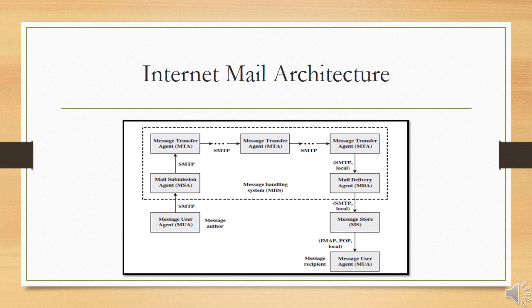To understand the operation of DKIM, it is useful to have a basic grasp of the internet mail architecture, which is currently defined in RFC 5598. At its most fundamental level, the internet mail architecture consists of a user world in the form of message user agents (MUA) and the transfer world in the form of the message handling service (MHS), which is composed of message transfer agents (MTA). The MHS accepts a message from one user and delivers it to one or more other users.